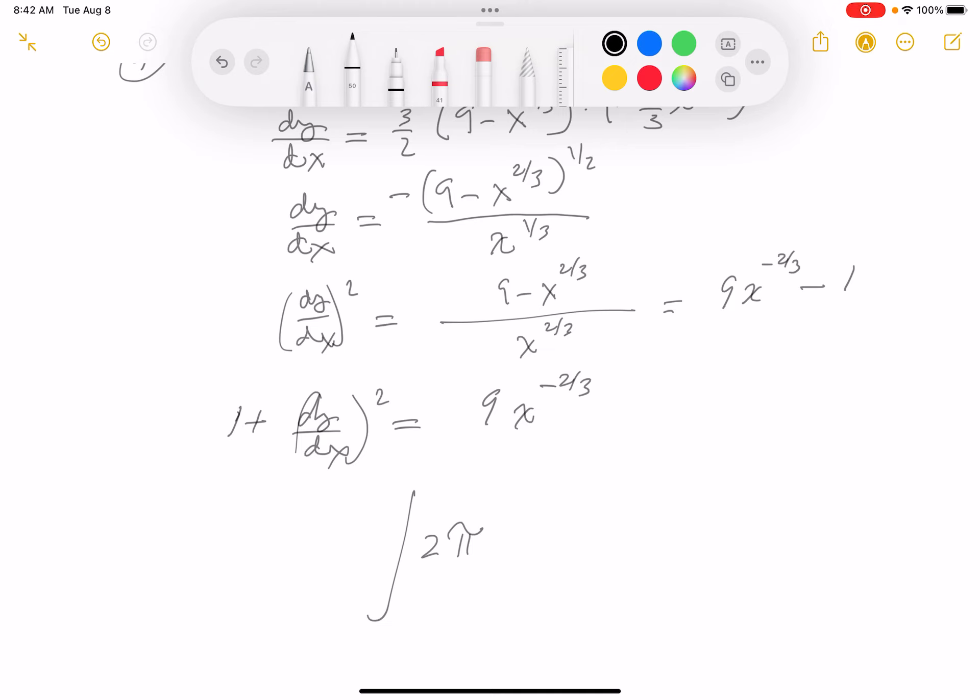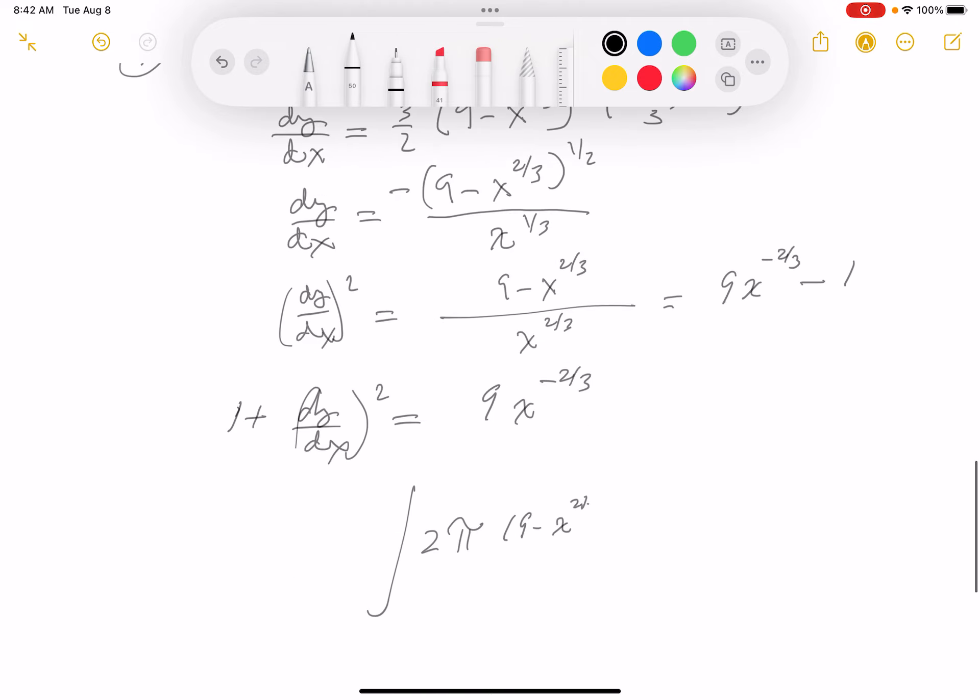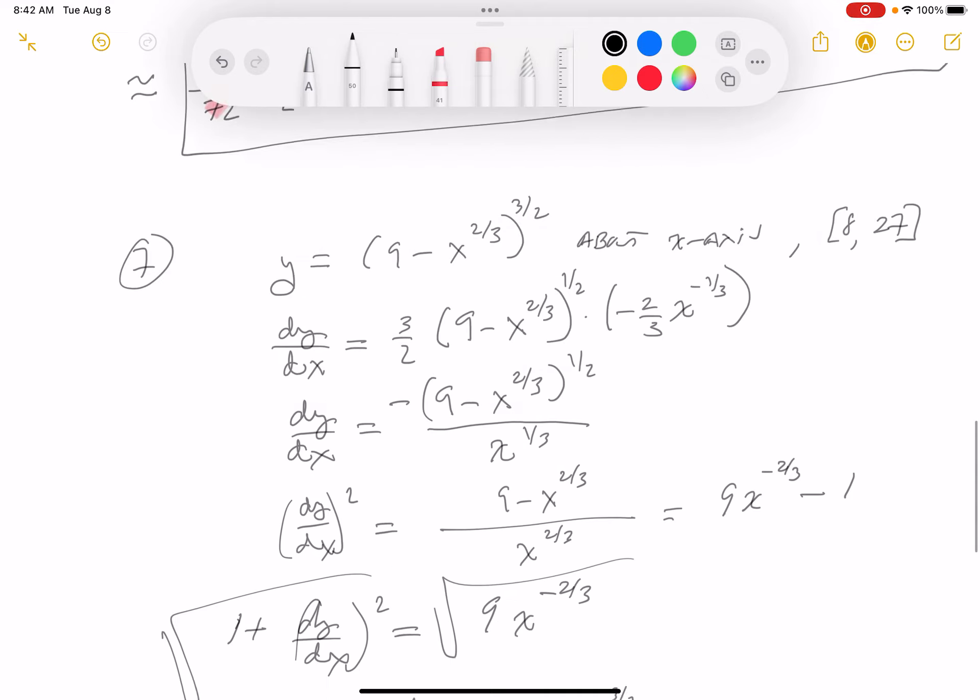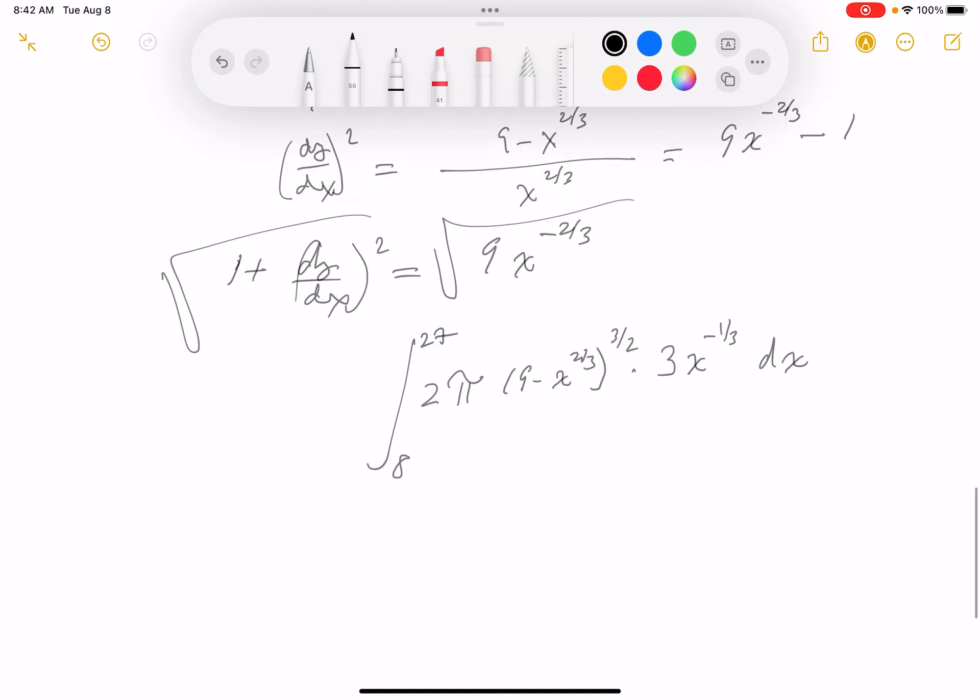And then I've got to be concerned about what the radius is going to be. You're rotating about the x-axis, so the radius is actually y. And what's y? Well, it's up there. It's 9 minus x to the 2 thirds, 3 halves, times the root of this thing over here. I'm going to write that down for you. So the root of that is actually 3. By the way, before I say anything, it's between 8 and 27. I don't have to worry about the root at this interval. So it's going to be 3, and then it's going to be x to the minus 1 third.